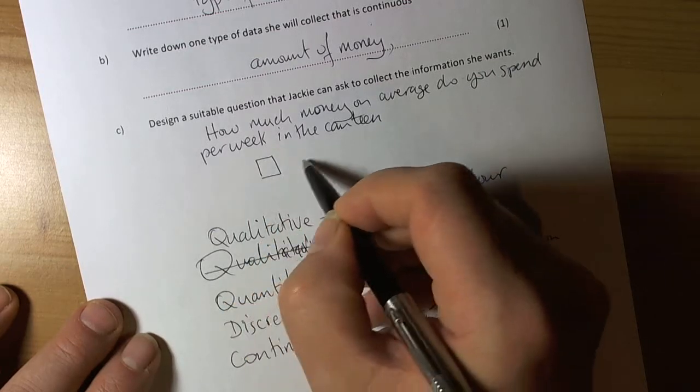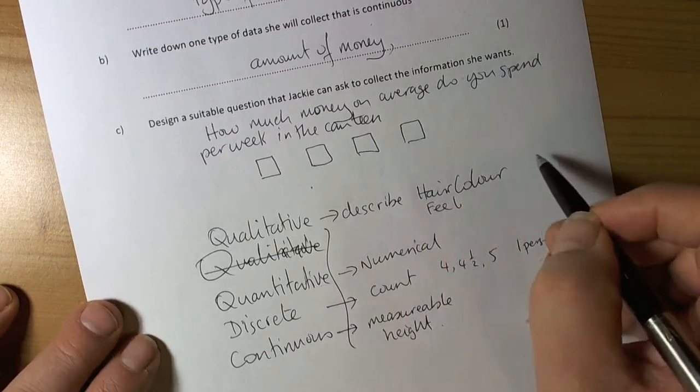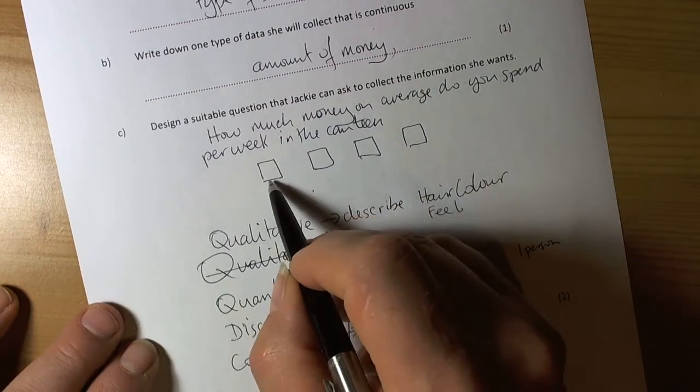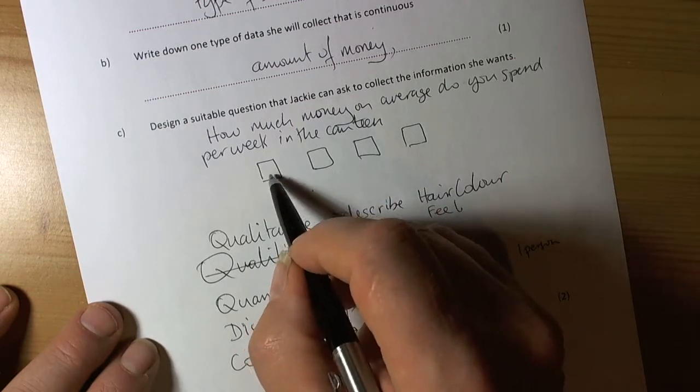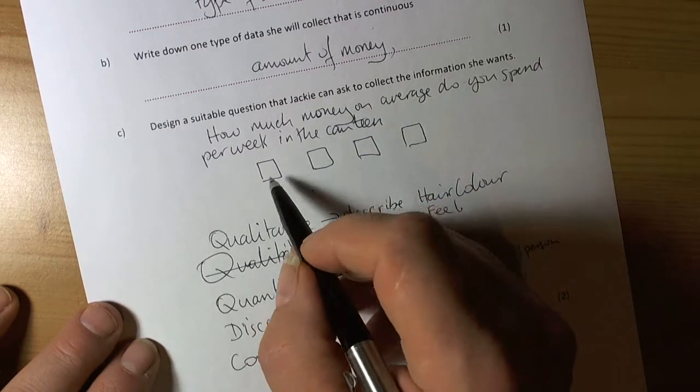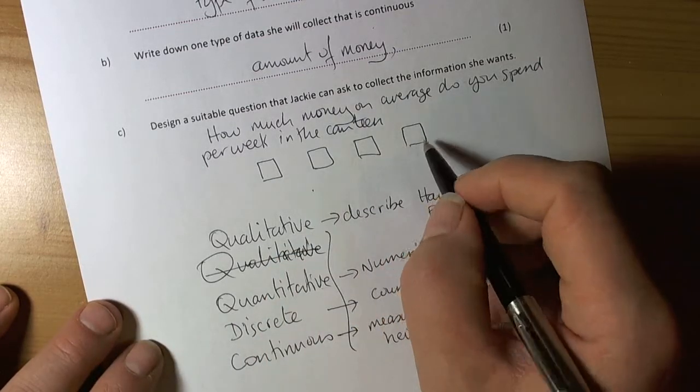Then we need response boxes because we need a quick way of collecting the data. The thing about response boxes is they mustn't overlap in terms of possible answers. People must be able to tick one box only. We've got to make sure the answers are exhaustive so that everybody can tick at least one box.